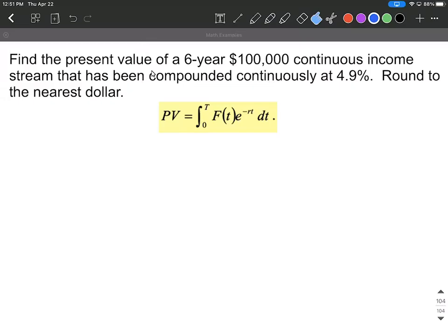The goal of this example is we're going to find the present value of a six-year $100,000 continuous income stream that has been compounded continuously at 4.9%. So we're given a lot of information there. Let's see if we can fill it all into the present value formula.